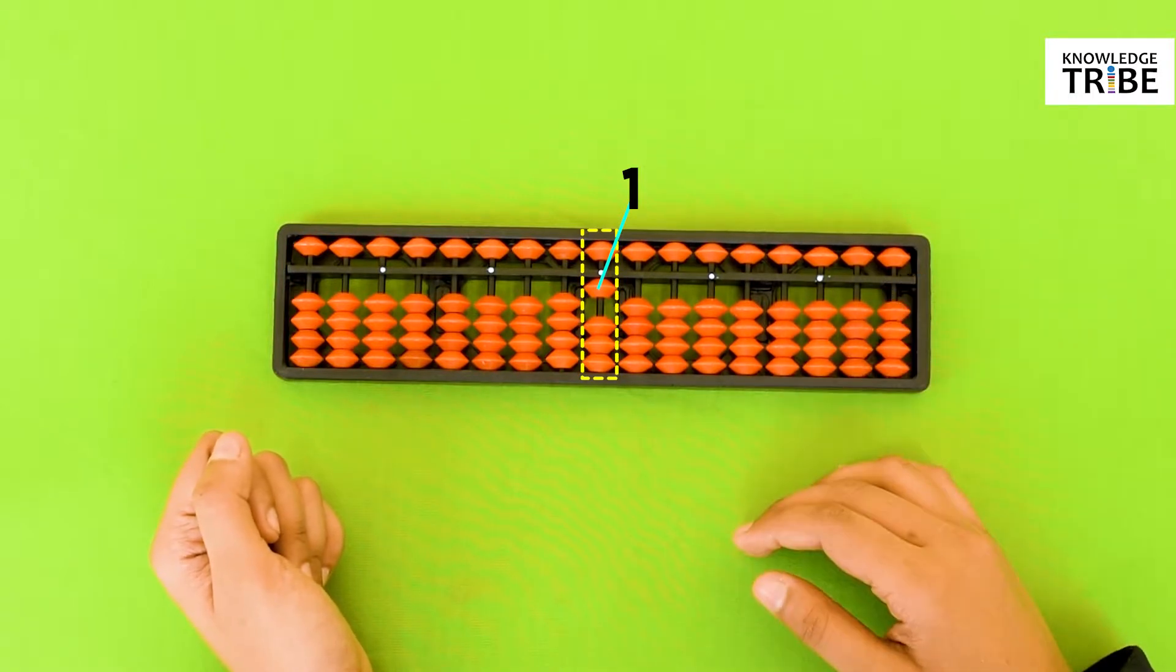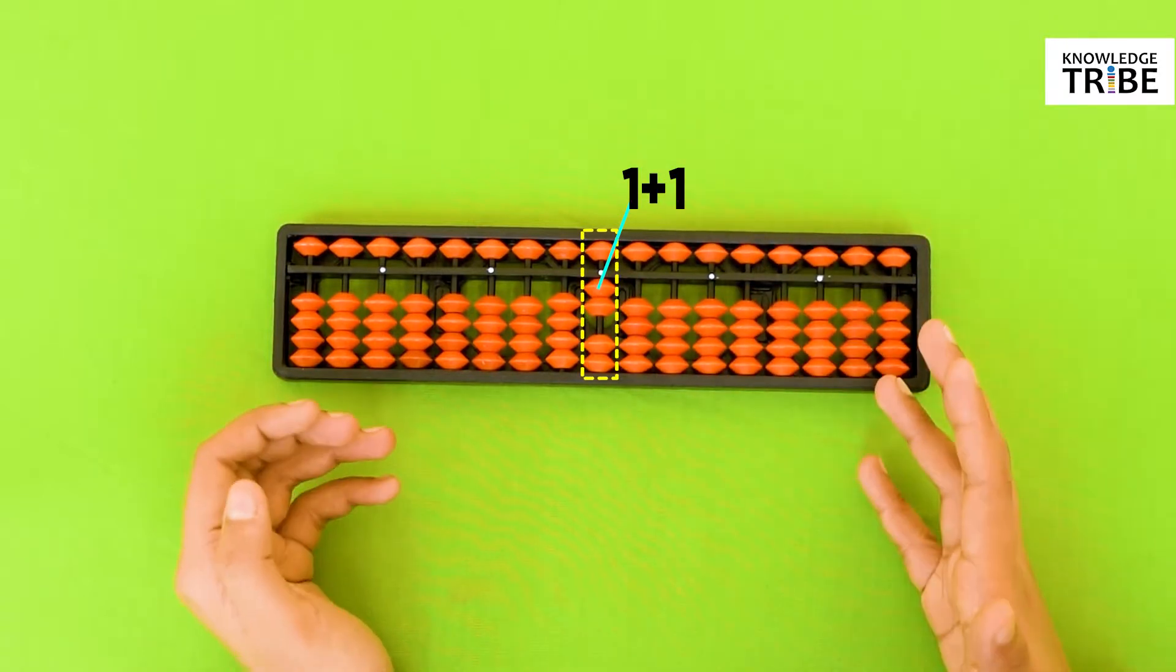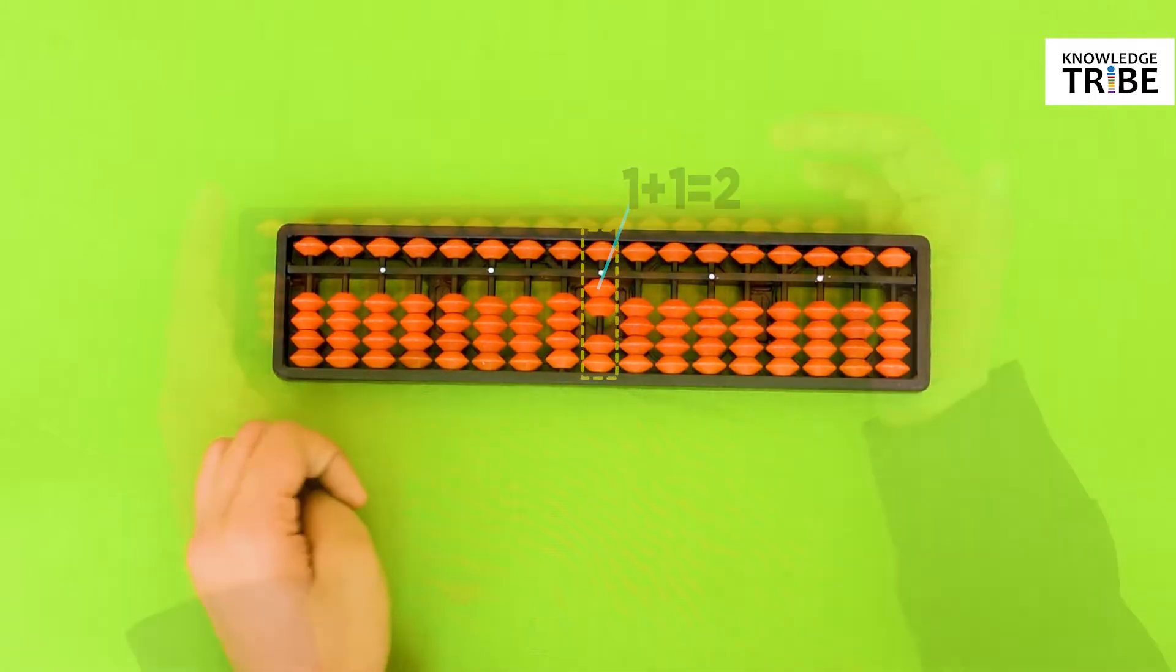Geniuses! Exactly! Add one more earthly bead towards the center beam. This counts 2 and that's the right answer. Perfect!